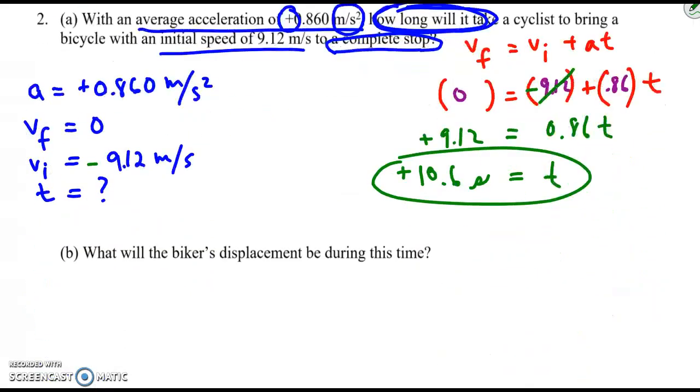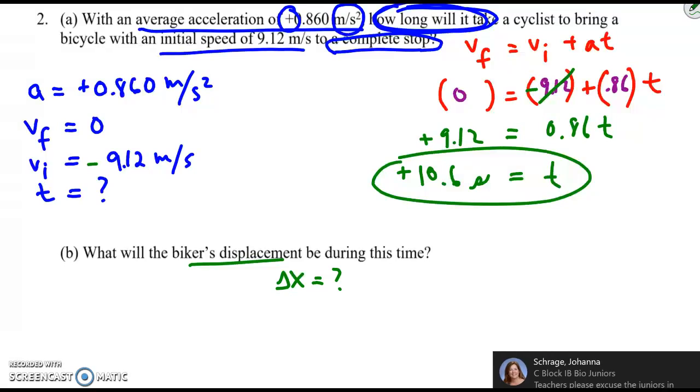We can now move on to the second part. What's the biker's displacement during this time? Displacement is delta x. I don't need to list my givens again. They're already above. So what do we do?